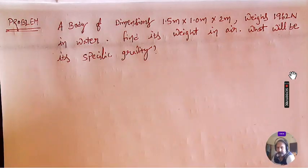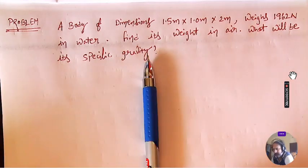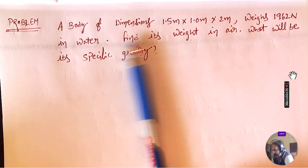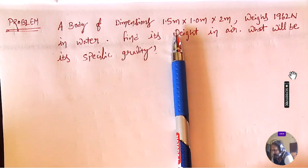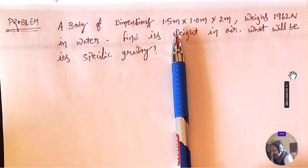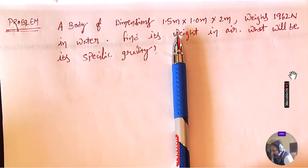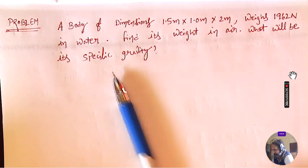Let us see one more problem. Here you can see there is a body of the dimensions 1.5 meter by 1 meter by 2 meter, whose weight is 1962 Newton. We need to find its weight in air and what will be its specific gravity.